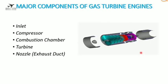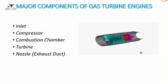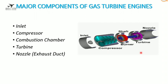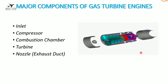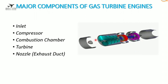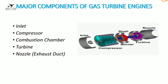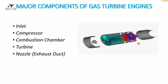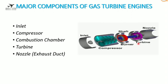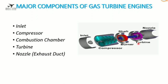There are five major components of a gas turbine engine: inlet, compressor, combustion chamber, turbine, and nozzle. We'll understand one by one the function of each individual component.